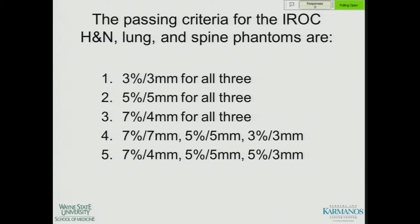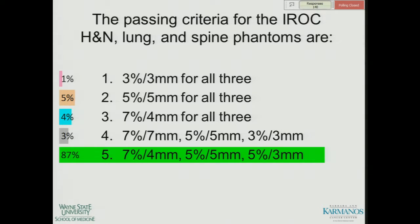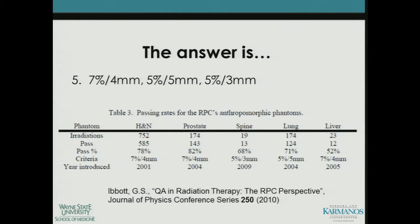So, your first SAM question: the passing criteria for the IROC head and neck, lung, and spine phantoms — is it 3%/3mm for all three; 5%/5mm for all three; 7%/4mm for all three; individual criteria of 7%/7mm, 5%/5mm, 3%/3mm; or individual criteria of 7%/4mm, 5%/5mm, 5%/3mm? The answer is of course number five — individual criteria for each test. Shown here is a table of passing rates and passing criteria, as well as the year introduced for each of these tests and other IROC tests available for external validation of your own systems.